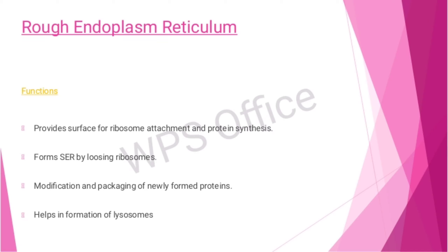Functions of the rough endoplasmic reticulum include: providing a surface for ribosome attachment and protein synthesis, forming smooth endoplasmic reticulum by losing ribosomes, modification and packaging of newly formed proteins, and helping in the formation of lysosomes.